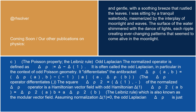The odd Laplacian — the normalized operator — is defined as delta_rho equals delta minus delta(1). It is often called the odd Laplacian, in particular in the context of odd Poisson geometry. It differentiates the antibracket: delta_rho(A,B) equals (delta_rho A, B) minus (minus 1)^|A| · A · delta_rho B. The squared operator delta_rho squared equals delta(1), i.e., the normalized delta_rho operator is a Hamiltonian vector field with odd Hamiltonian delta(1), satisfying the Leibniz rule. This is also known as the modular vector field.